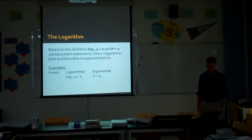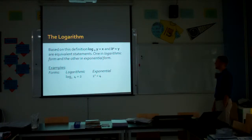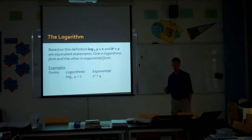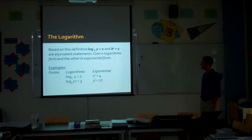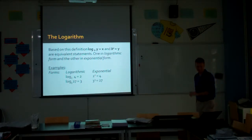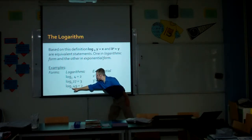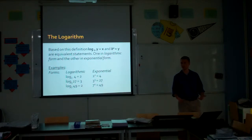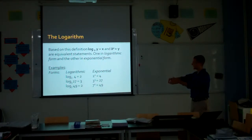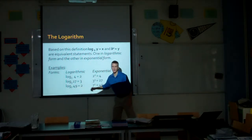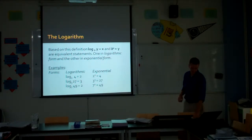Let's look at some examples here. Log base 2 of 4 is 2. Why? Well, because 2 squared is 4. You see the logarithmic form, the exponential form. Another one. Log base 3 of 27 is 3. Why? Because 3 cubed is 27. One more. Log base 7 of 49 is 2. Why? Because 7 squared is 49. That's how the logarithm works. Take the base of the logarithm, raise it to this power, and it should equal that. Every time.